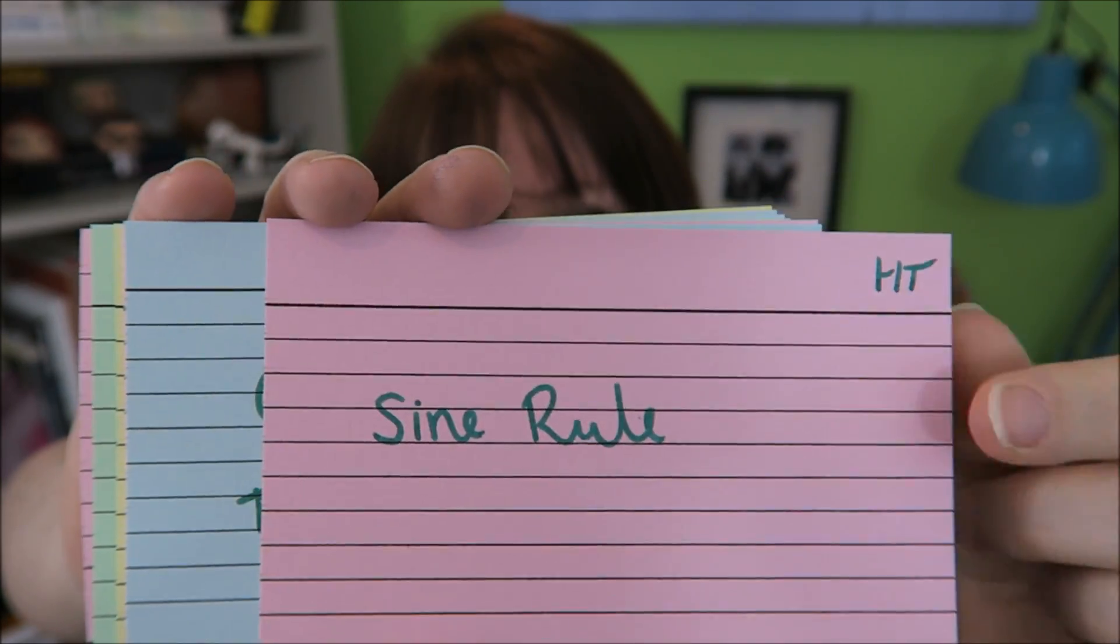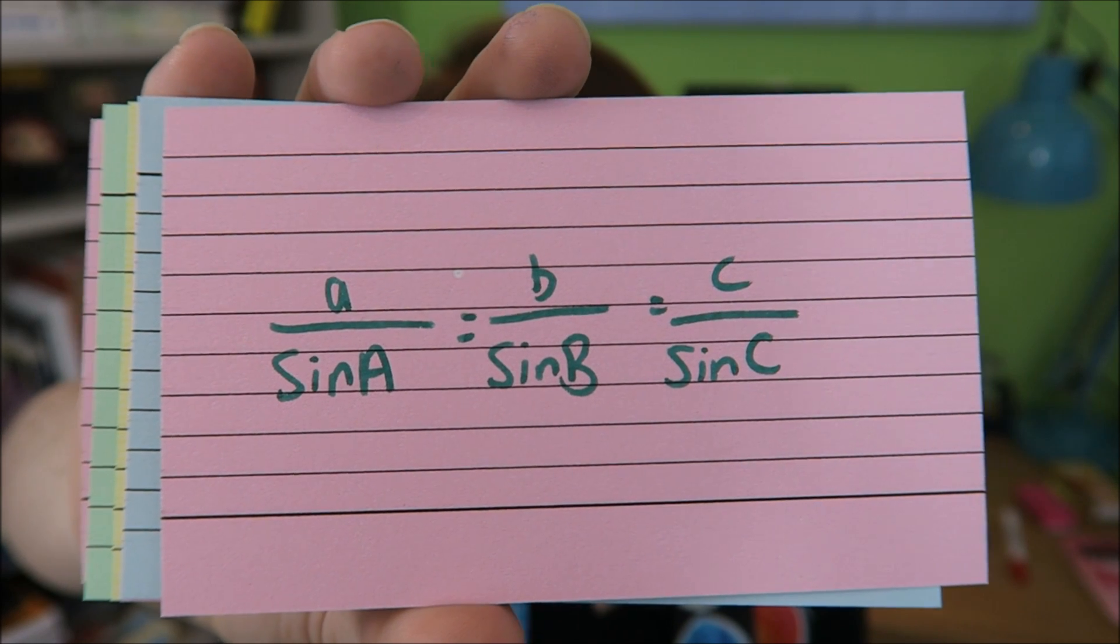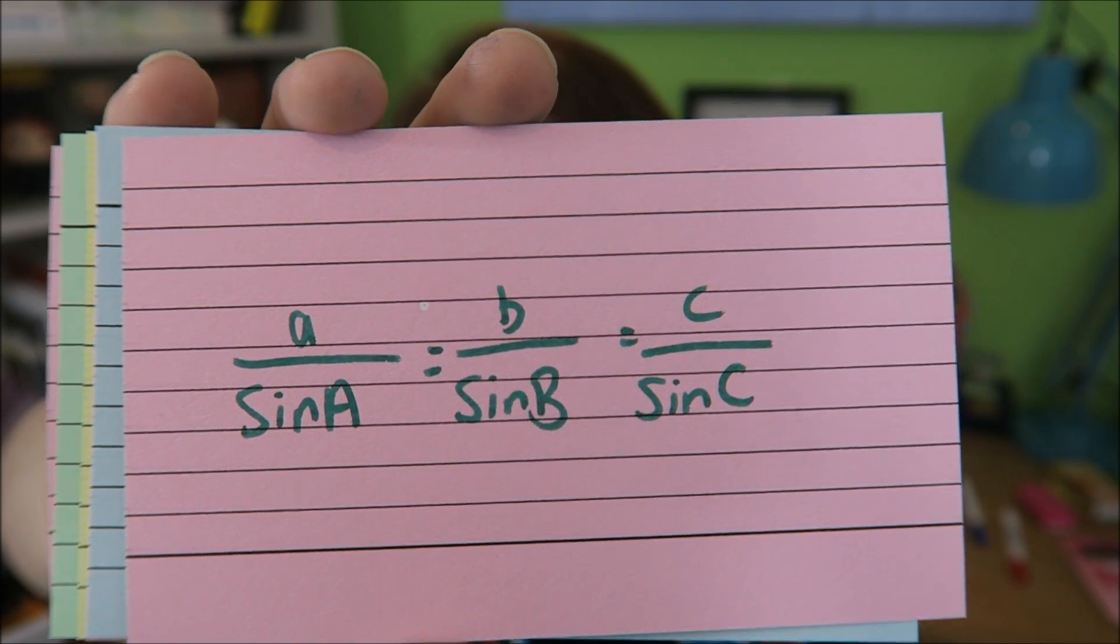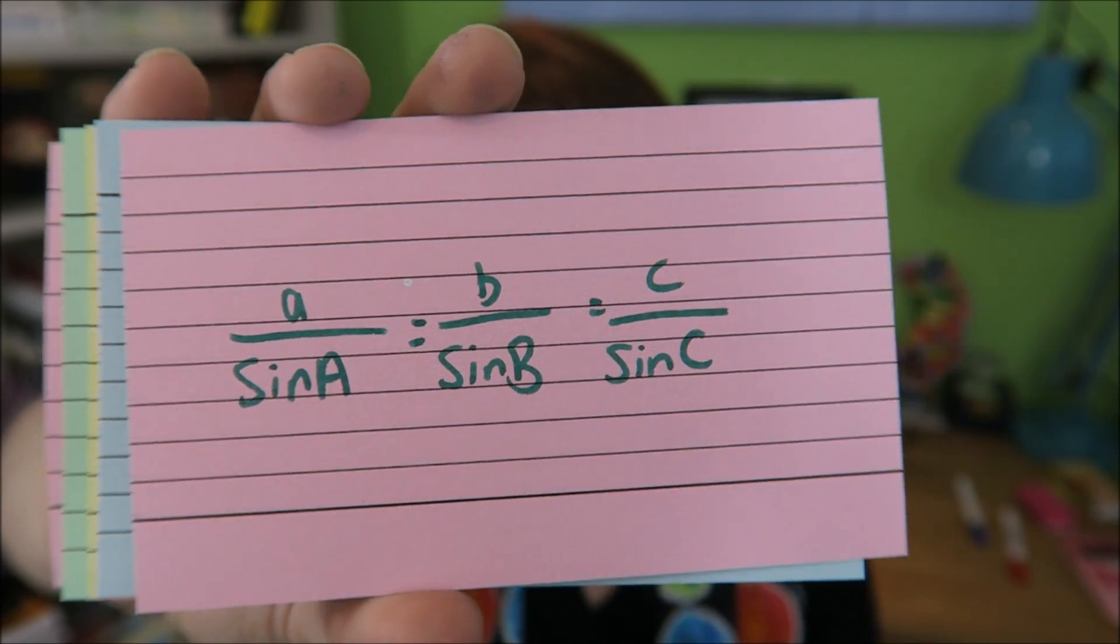Your sine rule. There are quite a lot of sine rules to learn. A over sine A equals B over sine B equals C over sine C, where on top we have the length and on the bottom we have the angles.